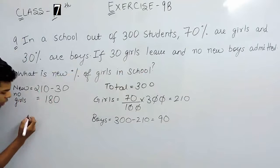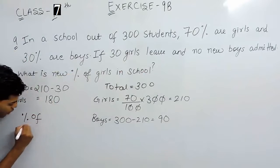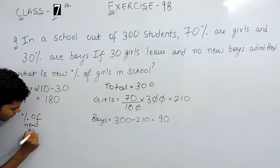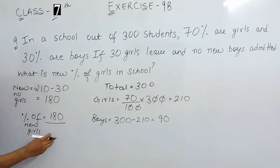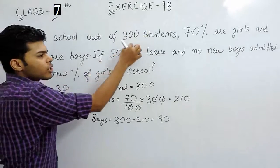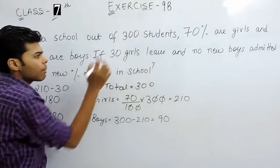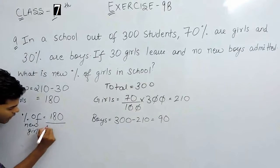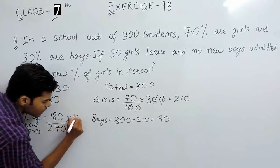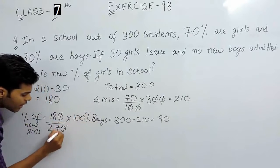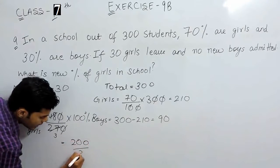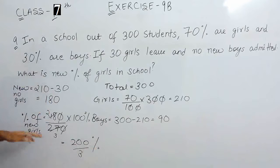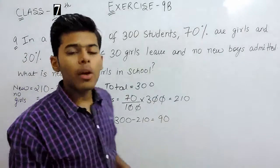So new number of girls will be in the numerator. Percentage of new girls will be equal to 180 divided by 270, because earlier there were 300 students and now 30 girls leave, so number of students left will be 270, multiplied with 100%. After simplification, this gives us 200 by 3%. So the percentage of new girls in the school is 200/3%. This is how you can solve this question.